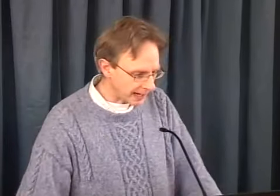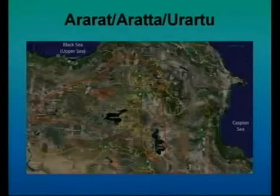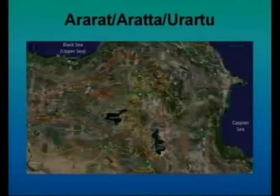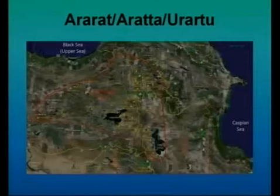Here we have a modern map of Ararat — that's the archaeological Aratu, bounded by the red lines. You can see the two lakes: Lake Van on the left-hand side and Lake Ermia just below on the right. Just north of it is the Mount Ararat range — a place of really special archaeological significance these days.